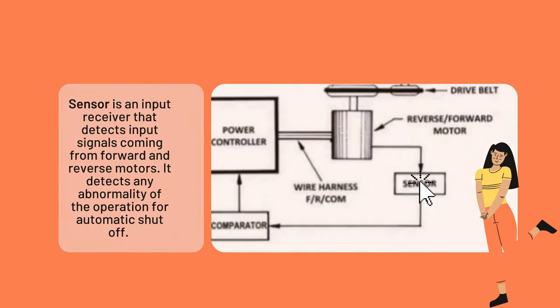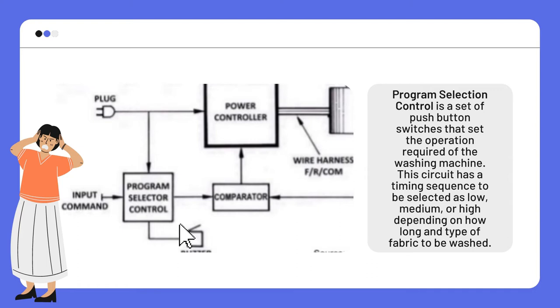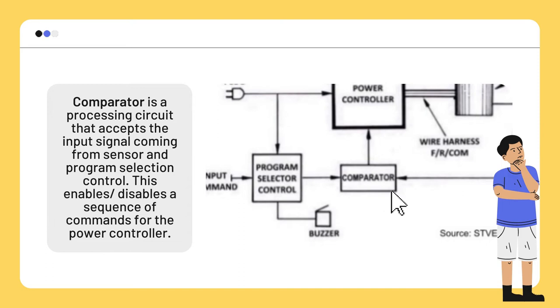Third, program selection control: it is a set of push-button switches that set the operation required of the washing machine. This circuit has a timing sequence to be selected as low, medium, or high, depending on how long and the type of fabric to be washed. Next is the comparator: it is the processing circuit that accepts the input signal coming from the sensor and program selection control, and enables or disables a sequence of commands for the power controller.